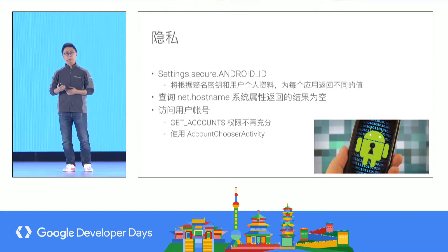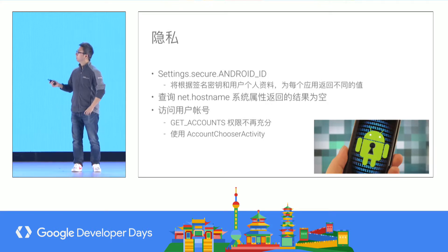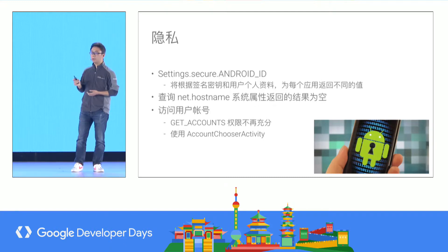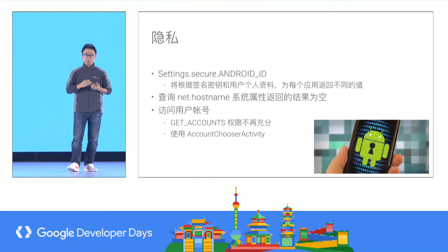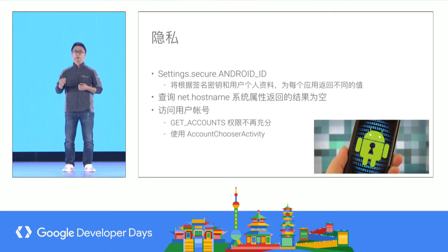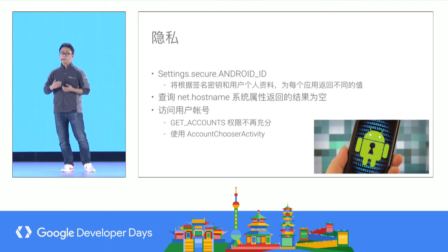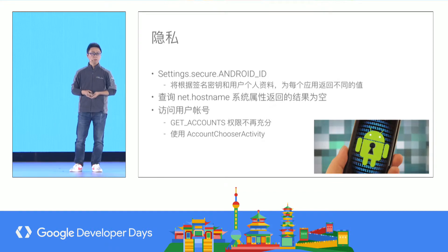When talking about behavior changes in Android O: for safety and privacy, all devices with Google Play Services will return a different Android ID based on the signing key and the user profile. So your application won't be able to read other applications' Android IDs. If you need an ID for advertising, use the Google Play Services-generated advertising ID that the user can reset. Also, querying net.hostname now returns null.